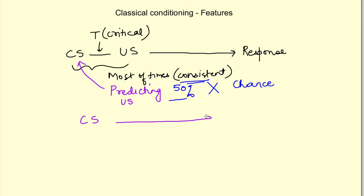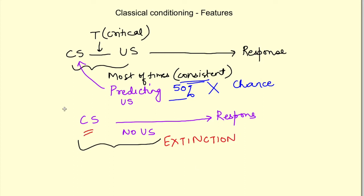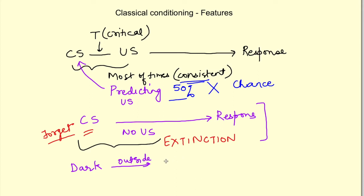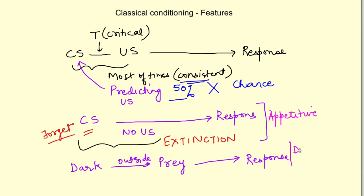If repeatedly the conditioned stimulus is not followed by the unconditioned stimulus, the learned response can undergo extinction even after learning. This is important for survival because the animal has to forget about stimuli which were previously important but have now become irrelevant. Also, conditioning can occur for both rewarding stimuli — as seen in the food example — and for noxious stimuli. For example, if an animal is attacked in the dark in a garden, it will associate darkness with the predator and hence with danger. Conditioning for rewarding stimuli is known as appetitive conditioning, and for noxious stimuli it is known as defensive conditioning.